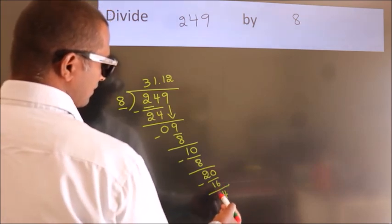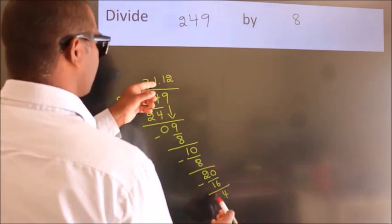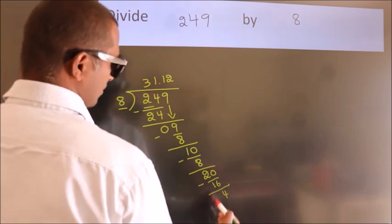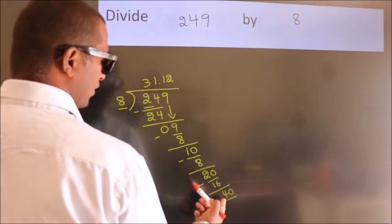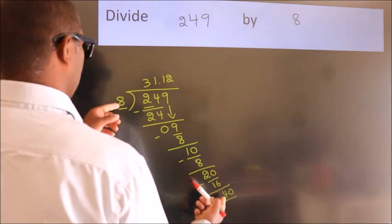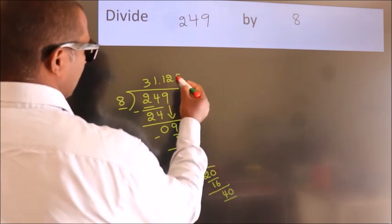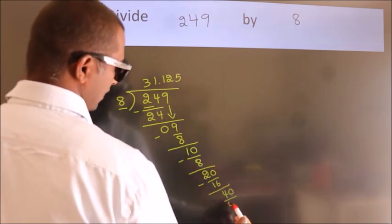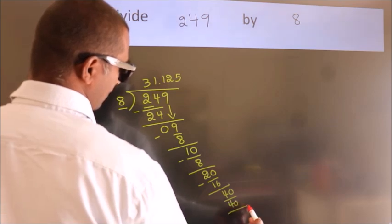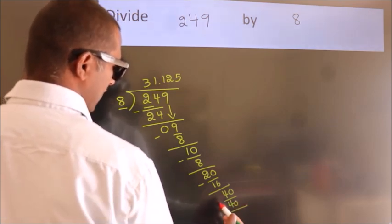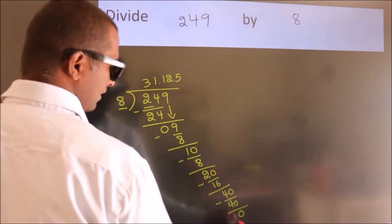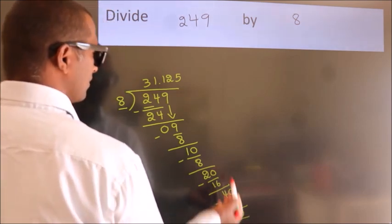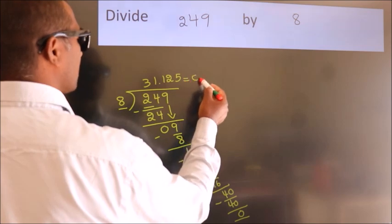After this, we already have the decimal. So directly take 0. So 40. When do we get 40? In 8 table. 8 fives, 40. Now we subtract. We get 0. Here we got remainder 0. So this is our quotient.